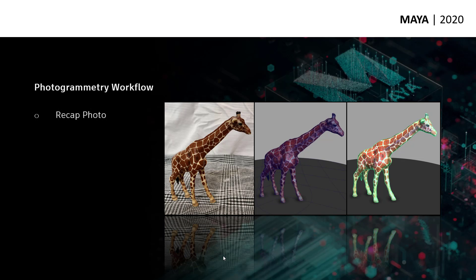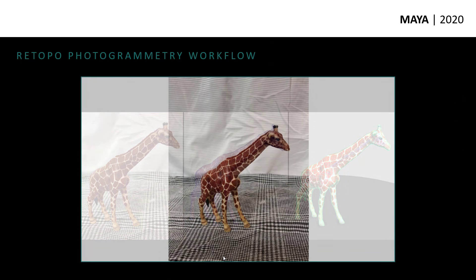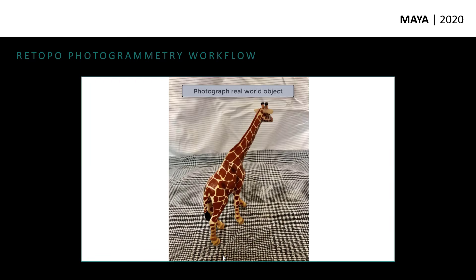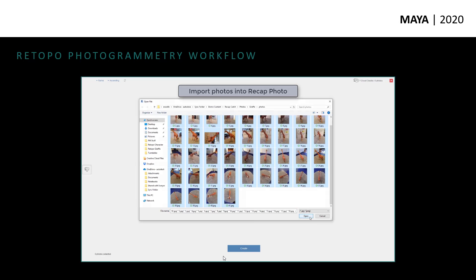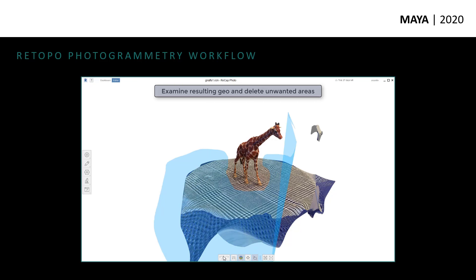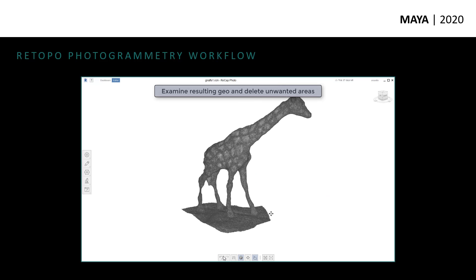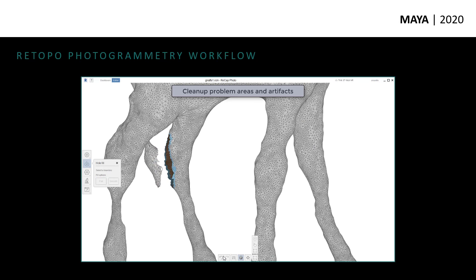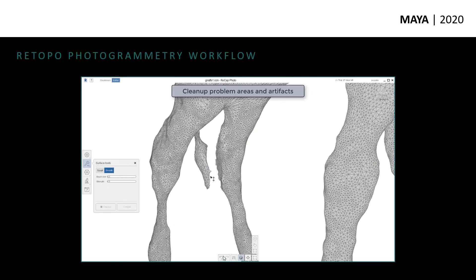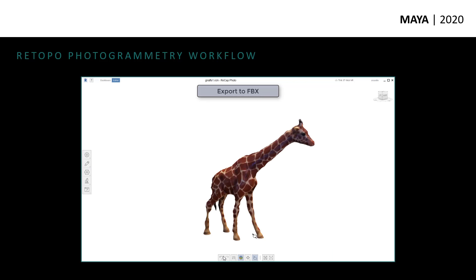I did this one myself. I took a picture of my child's toy — this giraffe, about six or seven inches tall. I ran that through Recap Photo, did a base cleanup, remeshed, retopoed, and did a little bit of quad draw, and ended up with what we see on the right. It starts with simple photos. Recap Photo is part of the M&E collection, so if you subscribe to Maya and the M&E collection, you get Recap Photo as part of that. With Recap Photo you can upload a series of images that visually describe a 3D mesh, then use cleanup tools to create ground planes, cut away artifact geometry, smooth distortions, fill holes, and ultimately export as FBX.